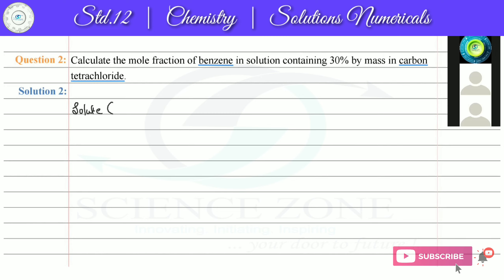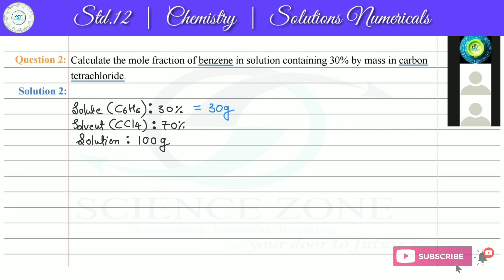The solute is benzene and the solvent is carbon tetrachloride. Since the percentage is given and no other information is available, we assume the total solution is 100 grams. If benzene is 30% by mass, that means 30 grams of benzene. The remaining 70% is the solvent, so the mass of carbon tetrachloride is 70 grams.